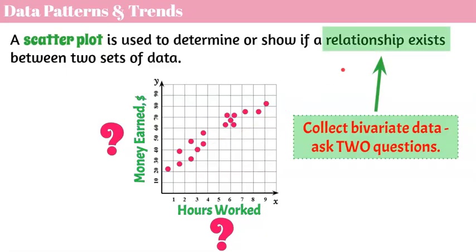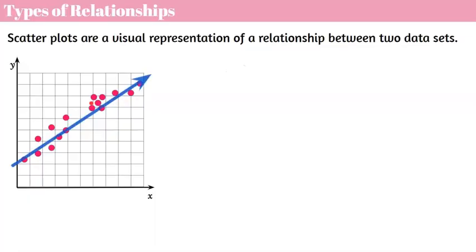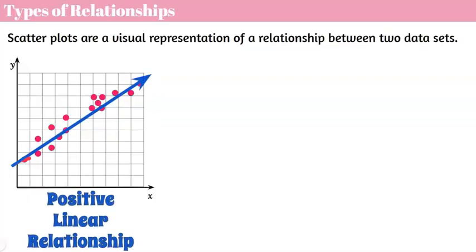When we're talking about a relationship existing, we can see that it did. Scatterplots are a visual representation of a relationship between two data sets. Here's the graph we've been looking at — hours worked and money earned. We can see that this is a positive linear relationship, because we could draw a line on our graph with a positive slope, since the line is increasing from left to right. When we look at a scatterplot, we're looking for a trend of data — not necessarily a straight line, but would all data points trend around a line, with approximately as many points above as below? This is a positive linear relationship, which makes sense: the more hours you work, the more money you earn.